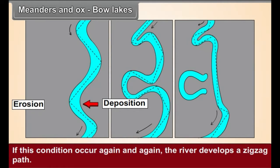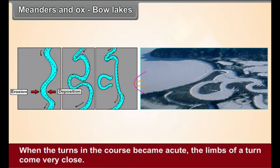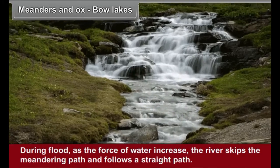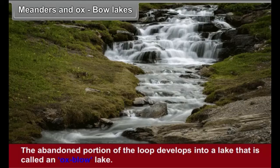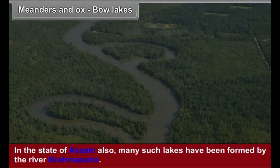If these conditions occur again and again, the river develops a zigzag path. Such a zigzag path is called a meandering path or course, and each loop along the path is called a meander. When the turns in the course become acute, the limbs of a turn come very close. During flood, as the force of water increases, the river skips the meandering path and flows a straight path. The abandoned portion of the loop develops into a lake that is called an Oxbow Lake. In the north Indian plains, the river Ganga and its tributaries have developed numerous such lakes. In the state of Assam also, many such lakes have been formed by the river Brahmaputra.